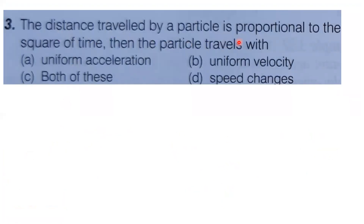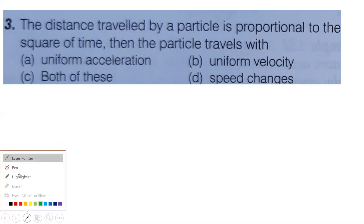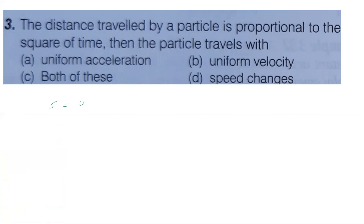Third problem: the distance traveled by a particle is proportional to the square of time — what does the particle travel with? The displacement equation is s equals uT plus half A T squared. If the particle starts from rest (u equals 0), then s equals half A T squared. So s is proportional to T squared, and half A is constant, meaning acceleration is constant — uniform acceleration.